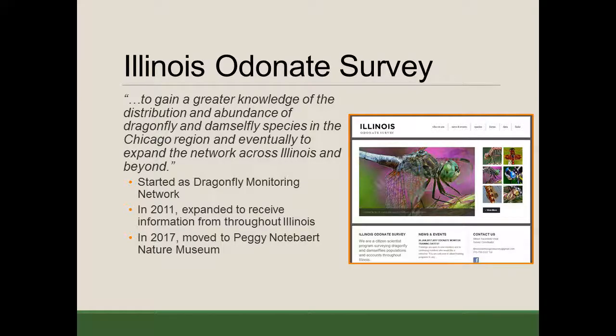Currently, we're providing our data to the Illinois Odonate Survey. The mission of the survey is to gain a greater knowledge of the distribution and abundance of dragonfly and damselfly species in the Chicago region, and eventually to expand the network across Illinois and beyond. The survey — IOS — started as the Dragonfly Monitoring Network. In 2011, they expanded to receive information from throughout Illinois. And just recently, earlier in 2017, they moved into the Peggy Notebaert Nature Museum.